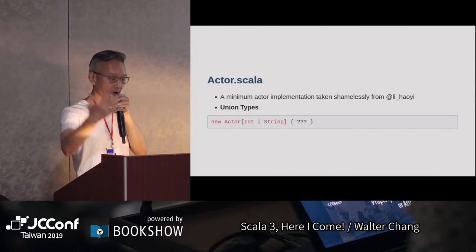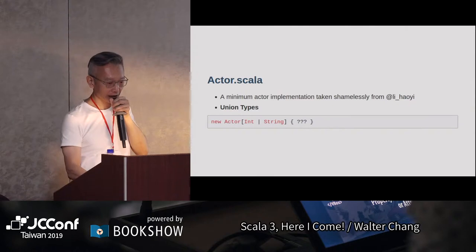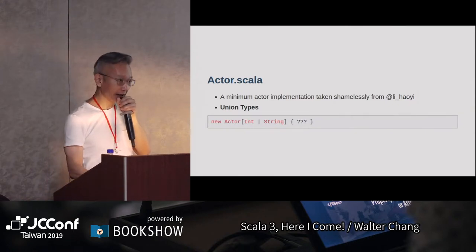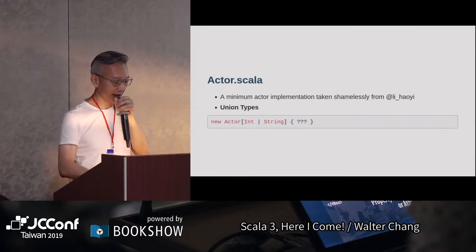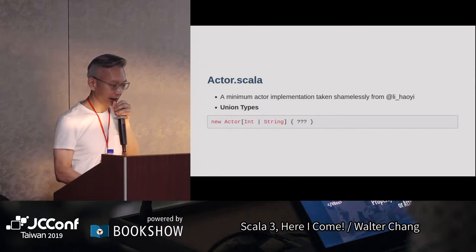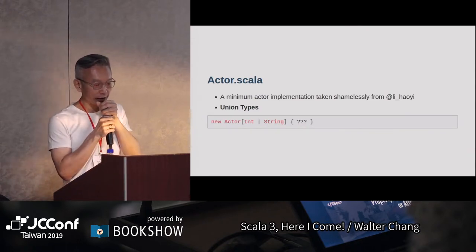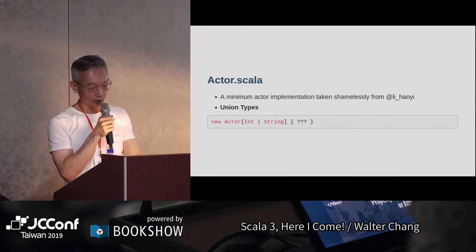接下來有一個actor。我們知道Scala有一個很有名的actor叫做Akka。這個actor是李浩義寫的，只有18行而已。他本來是用Scala 2寫，我轉成Scala 3大概18行。這裡我們會介紹所謂的union type，等一下看程式就可以比較清楚知道什麼叫做union type。